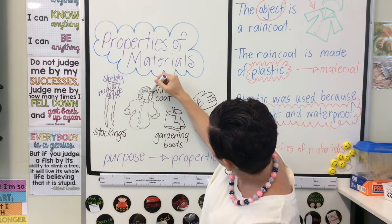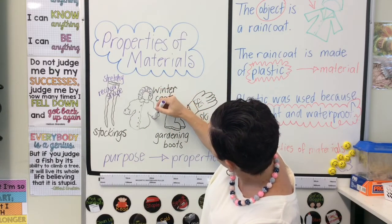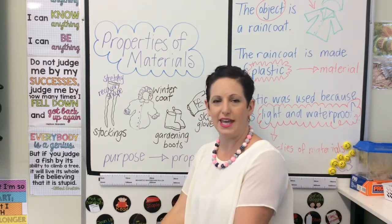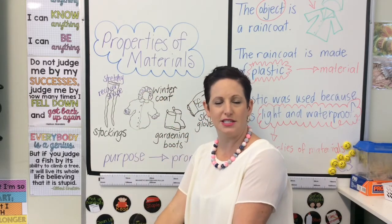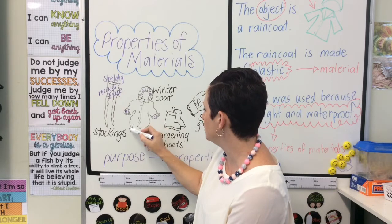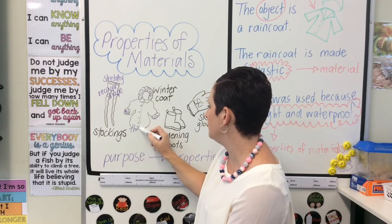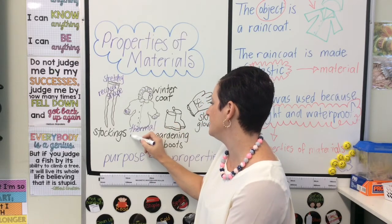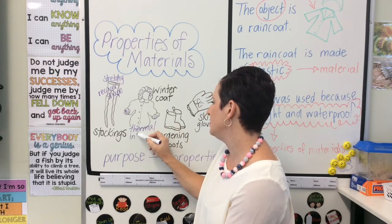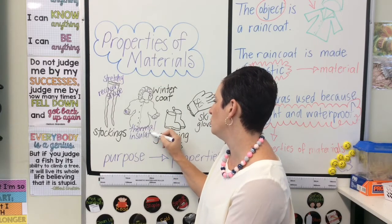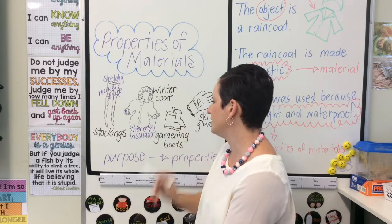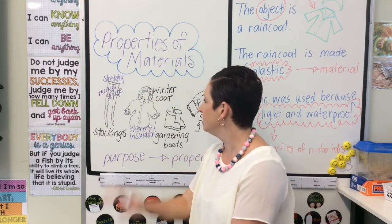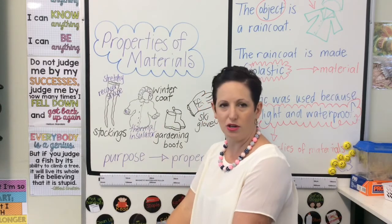That's what I've drawn here — a woolly lining — because wool is an excellent insulator. So a winter jacket needs to be a thermal heat insulator. That's the property of the material we need to use in a winter coat.